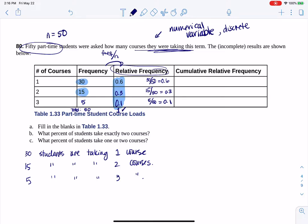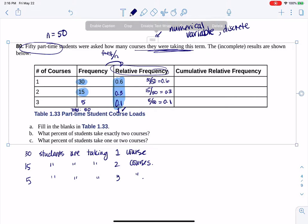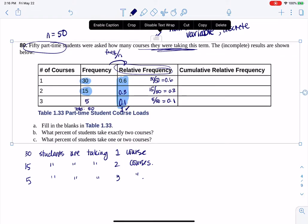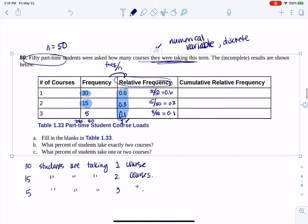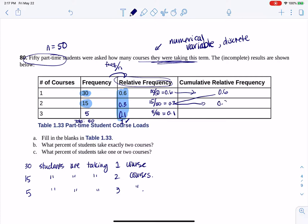And then if I want to go and get to the cumulative relative frequency column, I'm going to zigzag. So I'm going to move the 0.6 over. And then we're going to zigzag. So 0.6 plus 0.3 is 0.9, 0.9 plus 0.1 is 1.